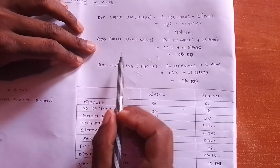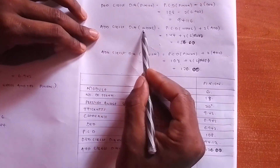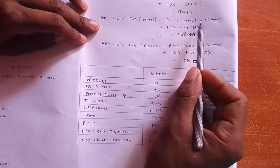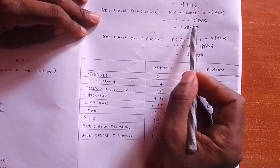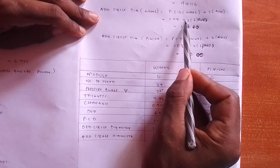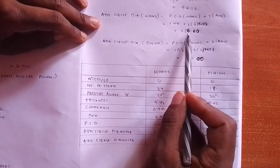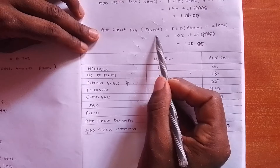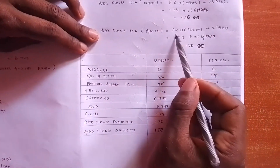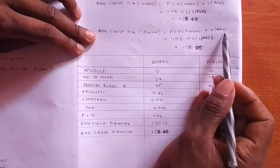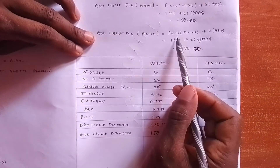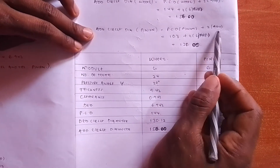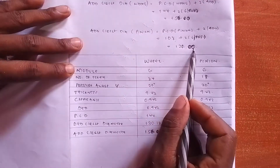The final feature we look for is the addendum circle diameter. For the wheel: PCD of the wheel plus 2 times addendum, so 144 plus 2 times 6, which equals 156.00. For the pinion: PCD of the pinion plus 2 times addendum, so 108 plus 2 times 6. The addendum is 6, the same as the module, giving 120.00.